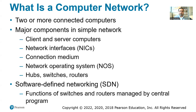In the past, NICs used to come in the form of an antenna. In other places, it can come as a slot where a USB can be inserted to get internet through that USB. Then we have connection medium, which refers to the wiring and cables that connect the network components. And then we have the network operating system, which is an operating system installed in a server or in that machine.